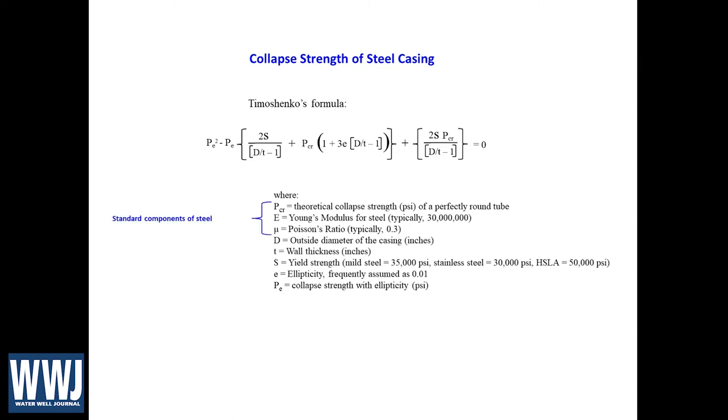The first three are really standard components. We have the theoretical collapse strength, shown here. That comes from really a lot of these other variables in a separate formula, but this is for a perfectly round tube. If we have a tube that is perfectly round and doesn't oval at all, doesn't get elliptical at all, that's what this would be. And of course in the real world that doesn't much happen, but it's something for us to consider. And then we have Young's modulus, that's typically 30 million for any type of steel. So we're using this for all three of our types of steel we're considering: the low carbon steel, the high strength low alloy, and the stainless steel. Same with Poisson's ratio, typically 0.3, so we use that for all of them. So these are standard components.